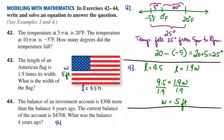Finally, for number 44, we know that the balance of an investment is 308 dollars more than the balance four years ago. So the balance means the current balance, that is. And we want to set up a model.